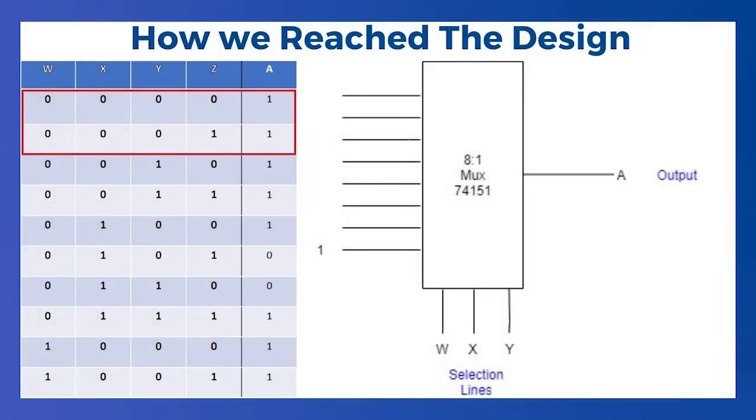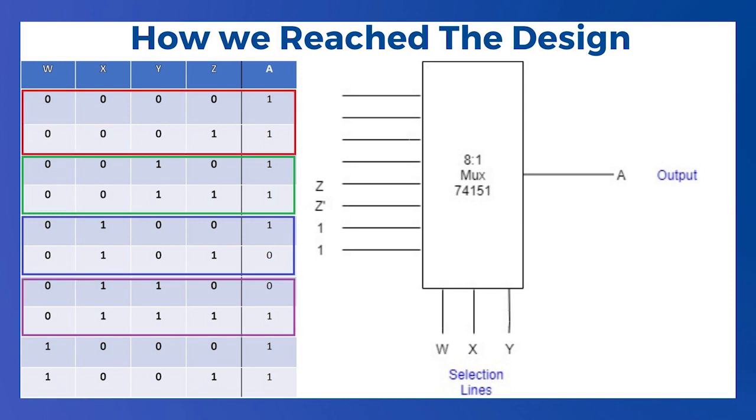Consider when WXYZ are at 0. Then in that case output A is 1. Hence we assign 1 on the first pin, and then same goes for pin 2. We assign 1 as output. When WXYZ are at 0 0 1, output is 1. For WXYZ at 0 1 0, output can be observed as Z bar, shown in blue box. And same goes for WXYZ at 0 1 1, output is Z, so Z goes to pin 4.